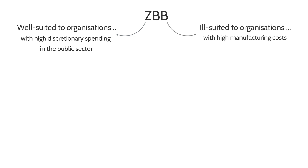However, zero-based budgeting is not useful in organisations with very high manufacturing costs. If the majority — if not all — of your expenditure is simply in materials and labour, and you have to use those to create your products, you can't really ask whether spending on materials is justified. For instance, asking whether we really need car tyres, or can't we just make a car without tyres — it doesn't really work like that. That's why zero-based budgeting is best used in organisations with a lot of discretionary spending, such as research facilities.